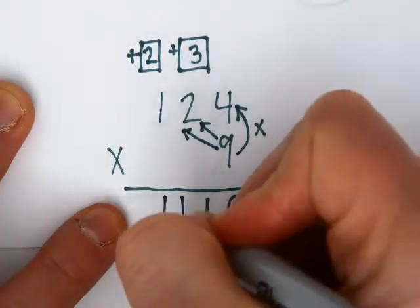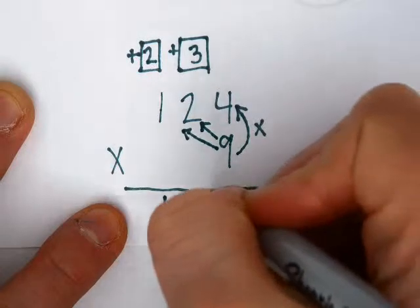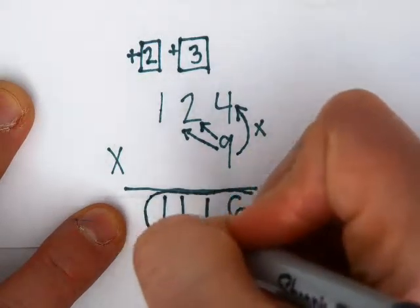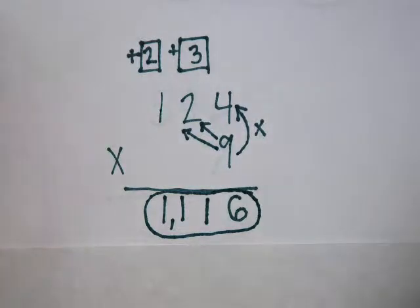And you're going to write the whole 11 right here. So the answer to 124 times nine would be 1116.